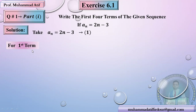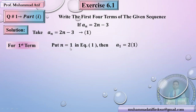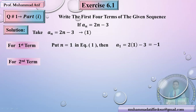For the first term, we substitute n = 1: 2 × 1 = 2, then 2 − 3 = −1. So the first term is equal to −1. For the second term, we put n = 2: 2 × 2 = 4, then 4 − 3 = 1. So the second term is 1.